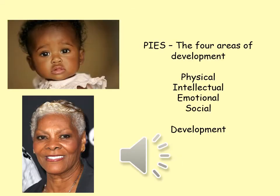Physical development occurs very rapidly in babies. From being born and able to do very little, they can quickly raise their heads, learn to sit by around six months, crawl at around nine months, and walk at around 12 to 13 months. In older people, physical changes of ageing include lines, wrinkles, hair colour changes, and illnesses that older people start to develop.